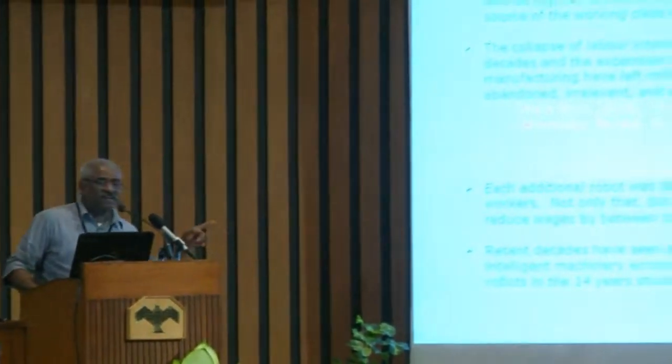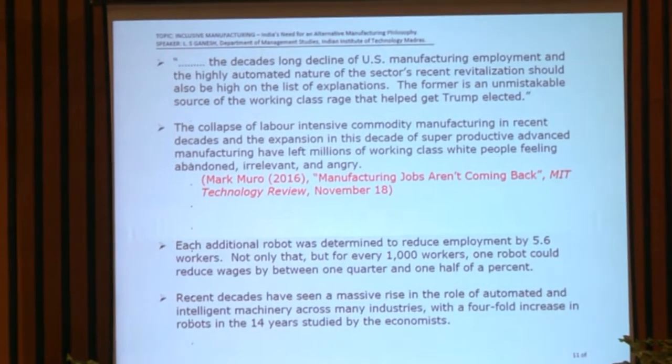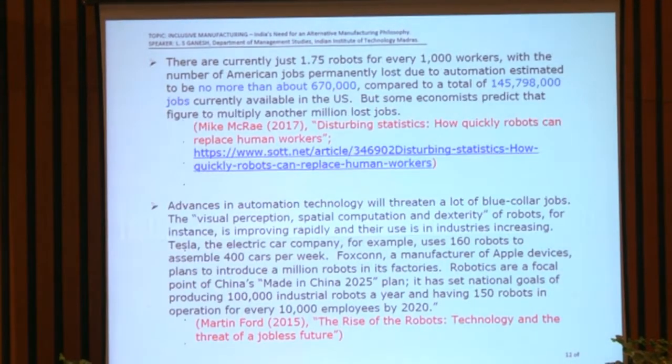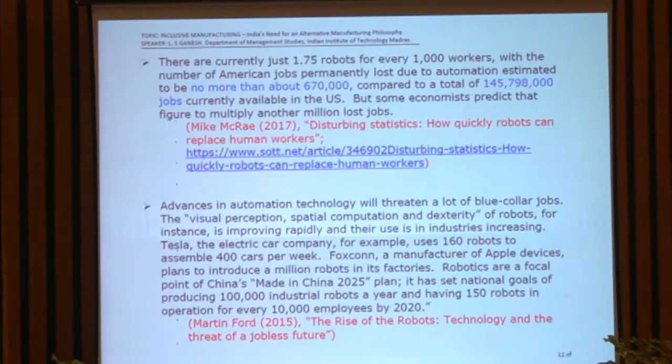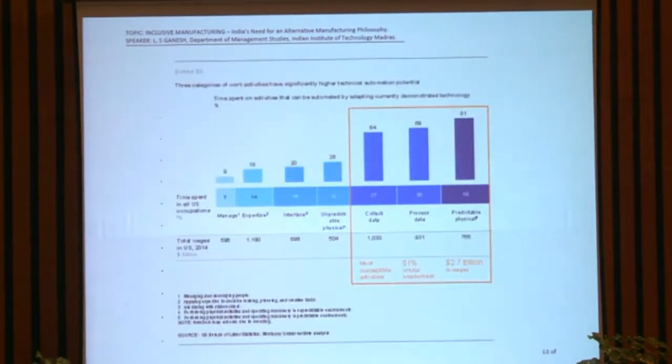Mark Muro notes the collapse of labor-intensive commodity manufacturing in recent decades and the expansion of super-productive advanced manufacturing have left millions of working-class people feeling abandoned, irrelevant, and angry. In fact, this paper also explains why Donald Trump won the elections. Currently there are just about 1.75 robots for every thousand workers, with jobs being permanently lost due to automation.